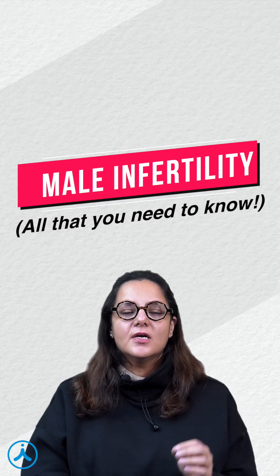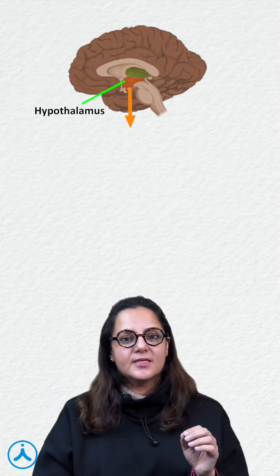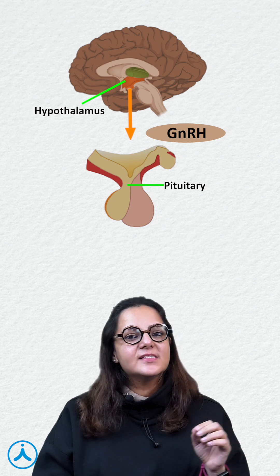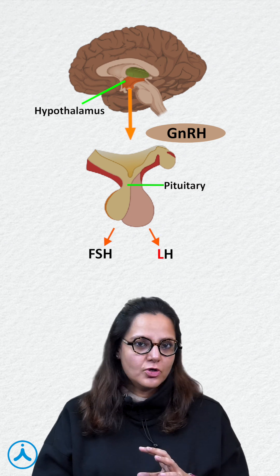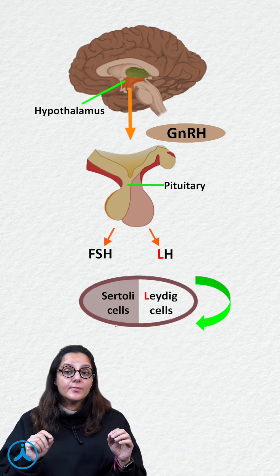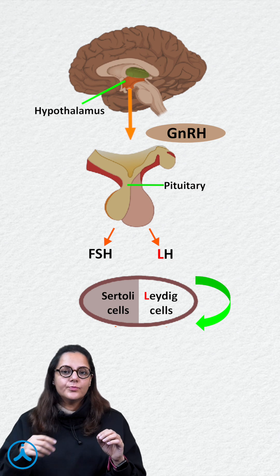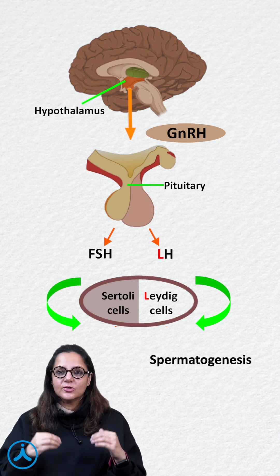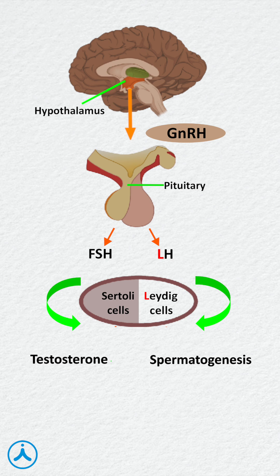Let's see how sperms are formed. Hypothalamus secretes GnRH which acts on the pituitary to release FSH and LH. LH acts on the Leydig cells of the testis — you can remember L4L — to promote spermatogenesis, and FSH acts on the Sertoli cells to release testosterone. This testosterone helps in the secondary sexual characteristics of males and also helps in promoting spermatogenesis.